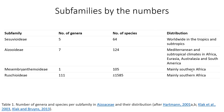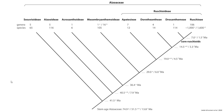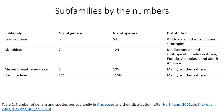Here is a table giving an idea of the subfamilies by the numbers and where they generally reside. The only thing missing is the very tiny subfamily Acrosanthoideae, which has one genus and only six species.